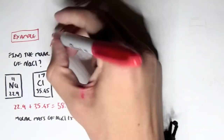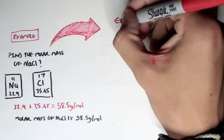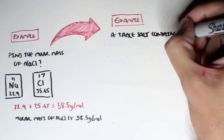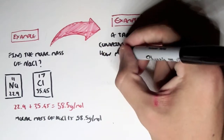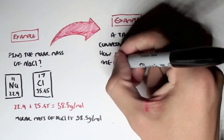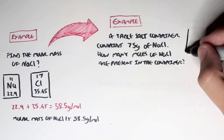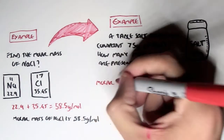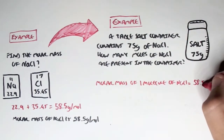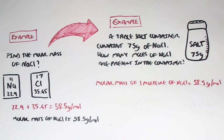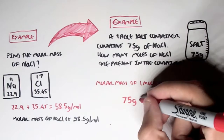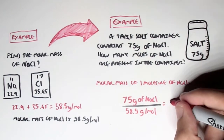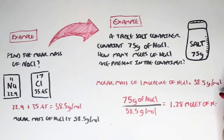We can take this example further. If we had a table salt container containing 75 grams of NaCl, how many moles of salt are present? Because the molar mass of NaCl is 58.5 grams per mole, we find the number of moles by dividing 75 grams by 58.5 grams per mole, which gives us 1.28 moles of salt.